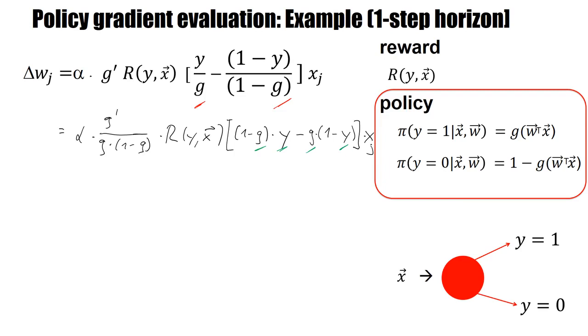Then I have a term that's left. And the term that's left here is just y. And on the other side, what I have left is just a term that is g. So I get α g prime over g(1-g) times R(y,x) times (y minus g) xj. That's already a nice formula. But I can make it even nicer.